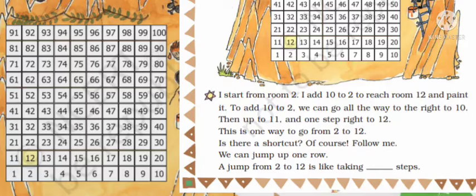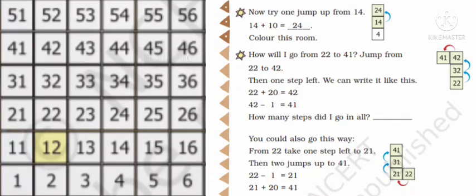Now try one jump up from 14. So you are in 14 and if you jump up one step you will reach to 24. Then color that room.